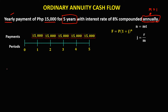To solve for n: m is 1 times the time, time is 5, so n equals 5. To solve for the rate per period j: the rate is 8%, which in decimal is 0.08, divided by m which is 1, so the interest per period j is 0.08.